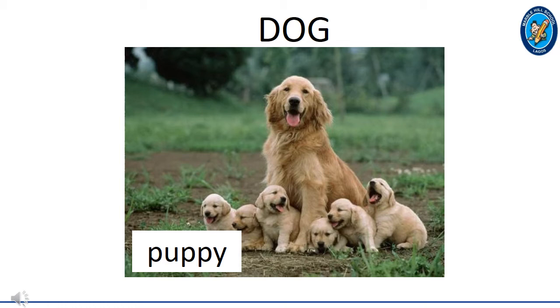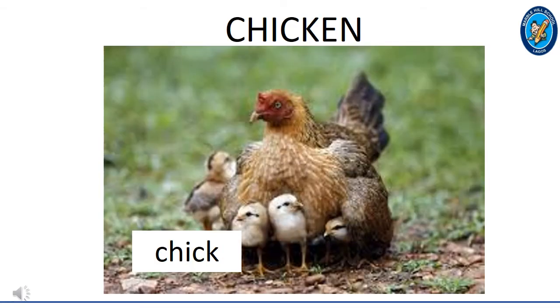Can you count the number of puppies? One, two, three, four, five, six. The young one of a dog is called a puppy.